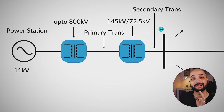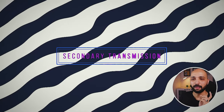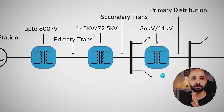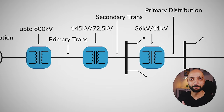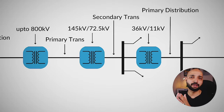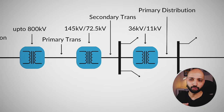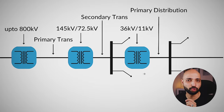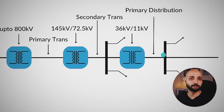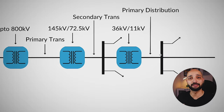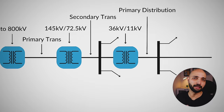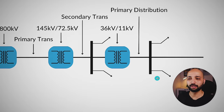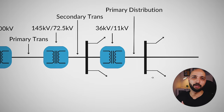This phase is what we call secondary transmission. After secondary transmission, the power is again stepped down to 36kV or 11kV, and we enter the distribution zone. This 36kV or 11kV level is what we call primary distribution. From here, power can also be given to consumers who need 36kV or 11kV directly in their plant.